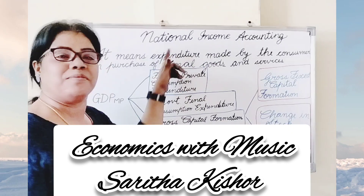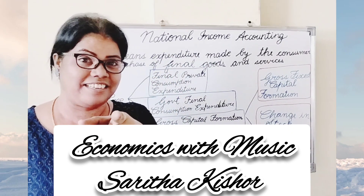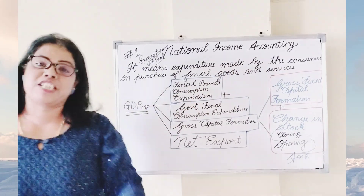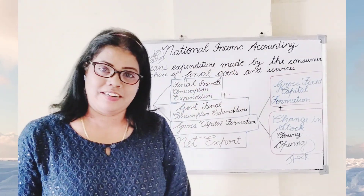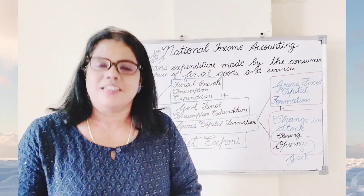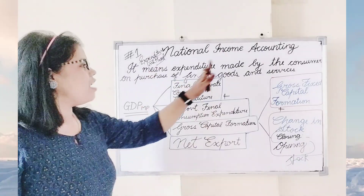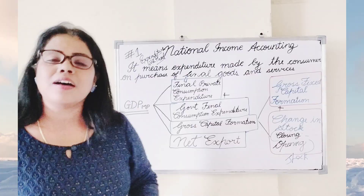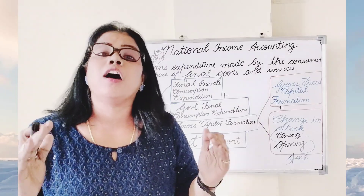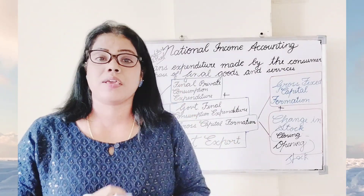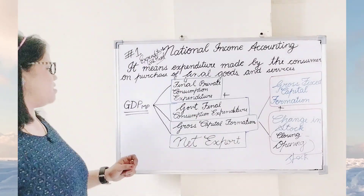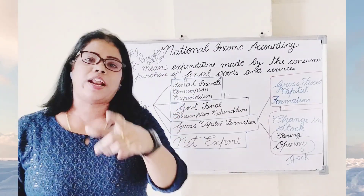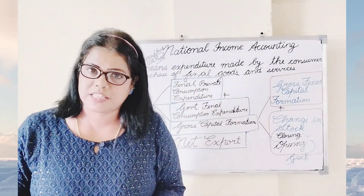National income by expenditure method. National income calculated with the help of the expenditure method: what is the expenditure method? It means that final goods and services purchased by a consumer or a household during an accounting year. There are different components used for calculating national income by expenditure method.